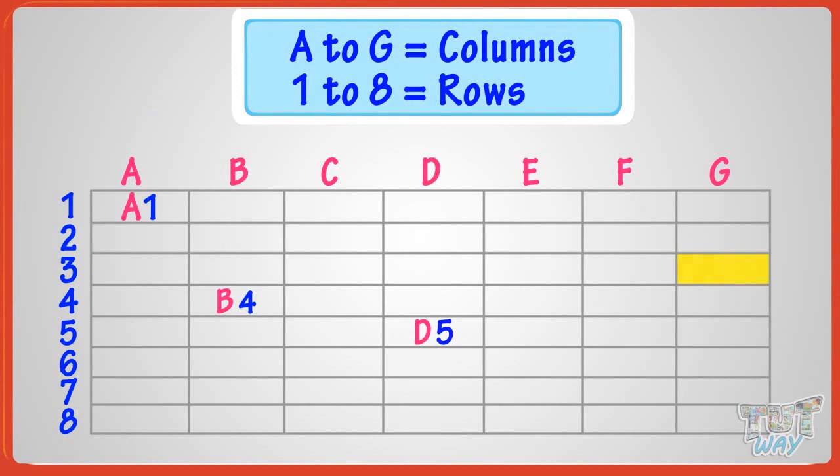Similarly, this cell is G3, as its column name is G and row name is 3. So it's G3.